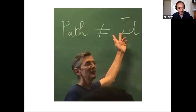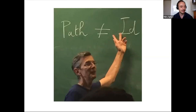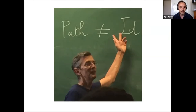I want to show you this picture that I took in 2016 of Jerry Coco, who was presenting the cubical model of type theory. One of his key insights was that the path type is not the same as the identity type, and I want to mention this because it's relevant to what we're going to discuss.